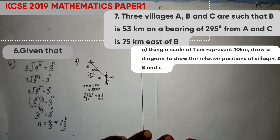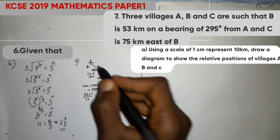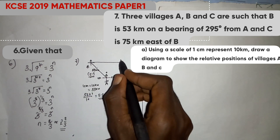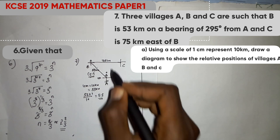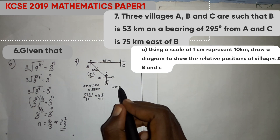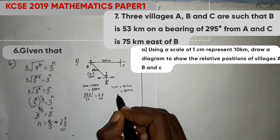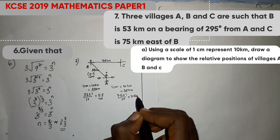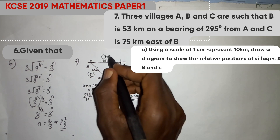Then you are told C is 75 km east of B. From village B, with north, east, south, and west directions, village C is 75 km to the east. Using the scale 1 cm equals 10 km, 75 km converts to 7.5 cm. Therefore the distance from B to C is 7.5 cm.